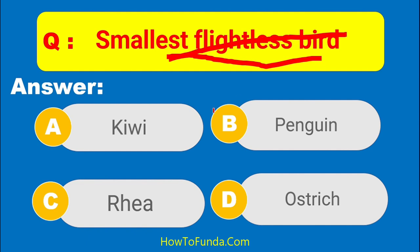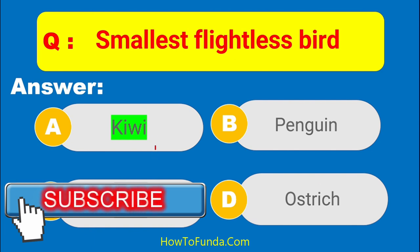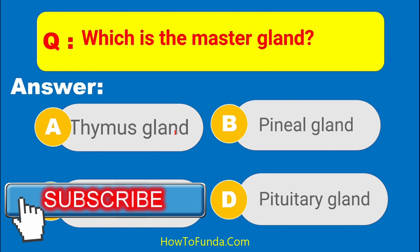Which is the smallest flightless bird? The smallest flightless bird is the kiwi bird. Which is the master gland in the human body — is it thymus gland, pineal gland, or pituitary gland?